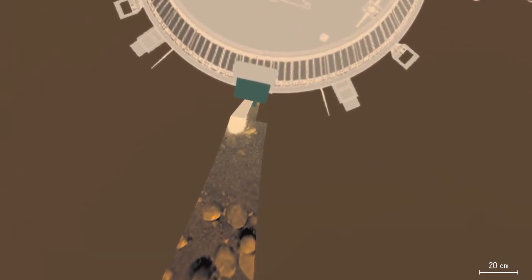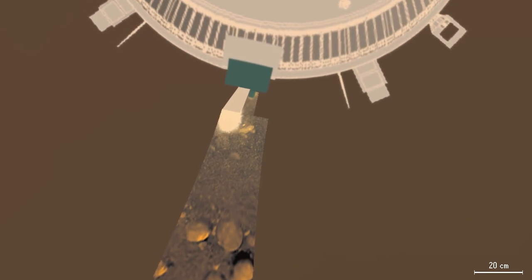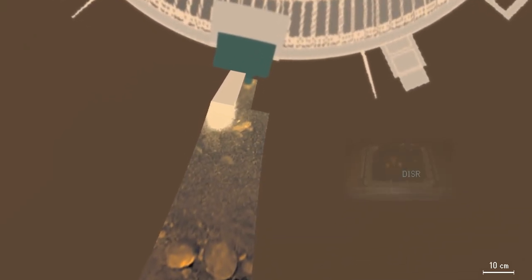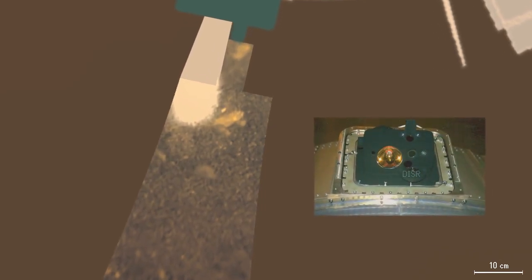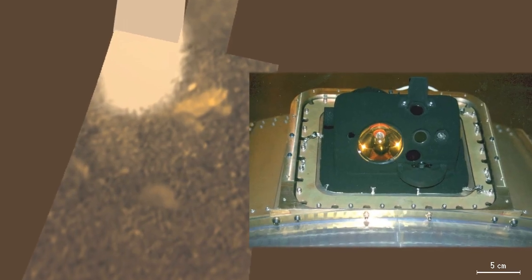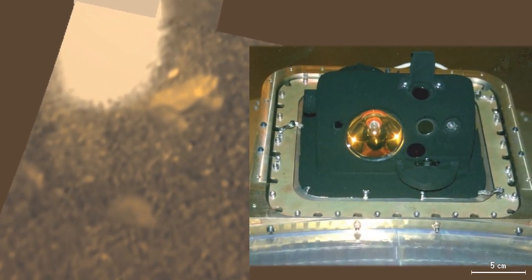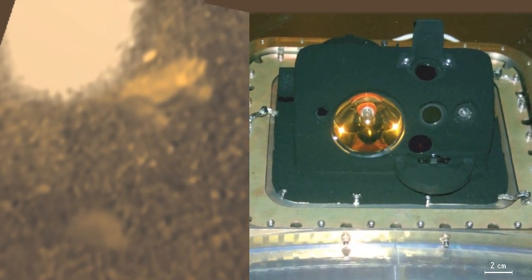Little sunlight reaches Titan's surface due to its thick haze and large distance from the sun. The right side shows the green DISR instrument with the gold-colored lamp and the three camera windows to its right. The cameras that provided the first close-up view of Titan's shrouded surface.